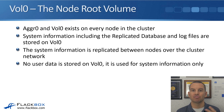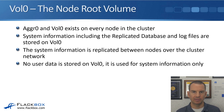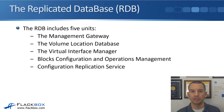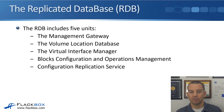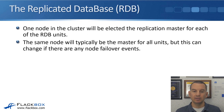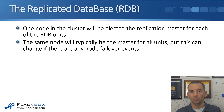Vol 0 is dedicated for system information — you cannot have any normal user data saved in vol 0. One of the things on there is the RDB, the replicated database. The RDB has five units: the management gateway, the volume location database, the virtual interface manager, blocks configuration and operations management, and the configuration replication service. One node in the cluster will be elected the replication master for each of the RDB units, and that node is in control of the replication. The same node will typically be the master for all units — typically the first node in the cluster — but that can change if there are any failover events.